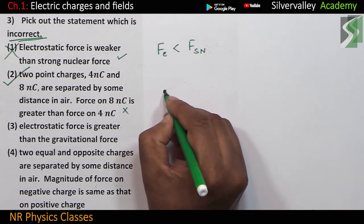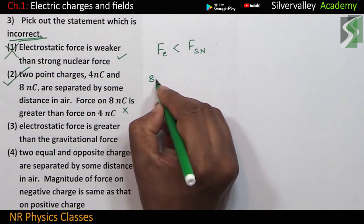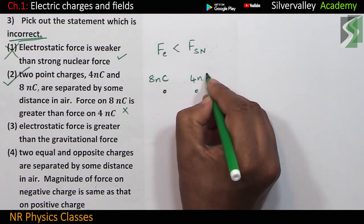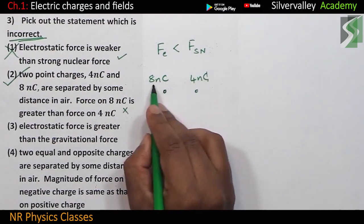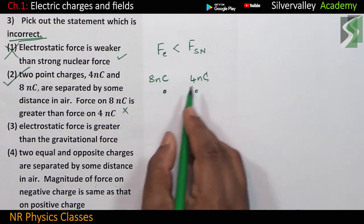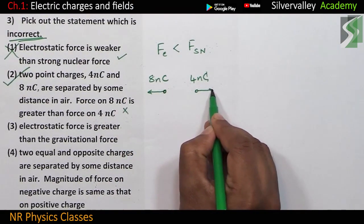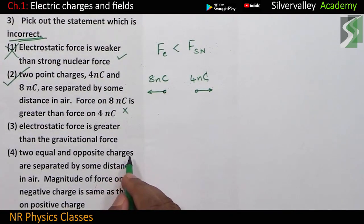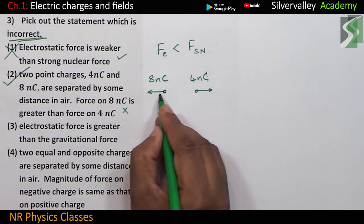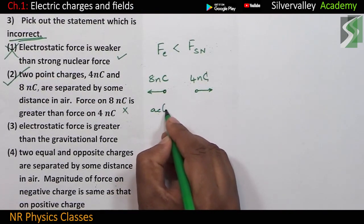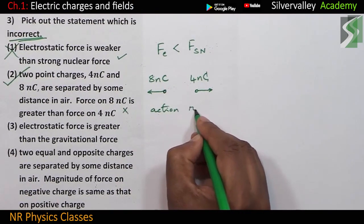If this is 8 nanocoulomb and the second charge is 4 nanocoulomb, if these two are like charges, positive, positive, then there is repulsion like this. So, these two are equal and opposite, action-reaction pair. Let me write action-reaction.